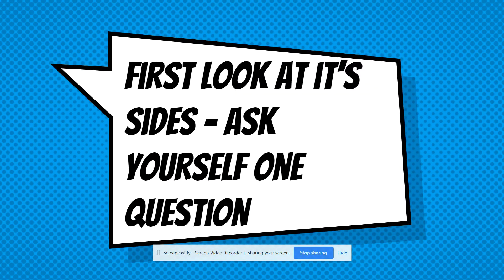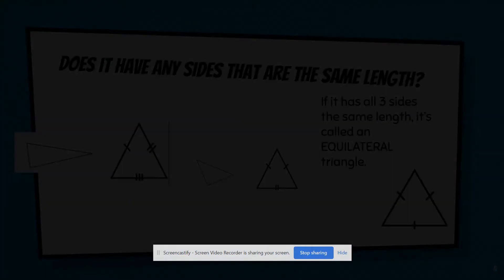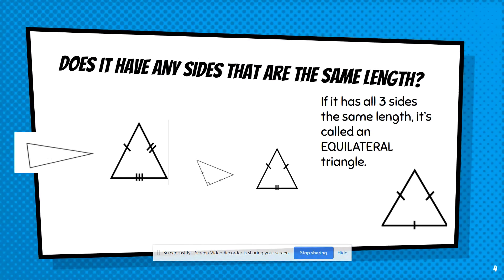The first thing I want you to do is look at the sides. When you get a triangle and you have to identify it based on its properties, ask yourself this one question: does it have any sides that are the same length?